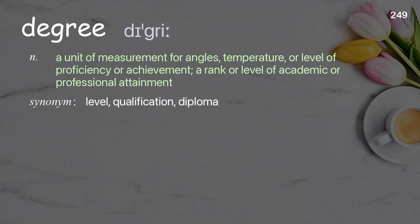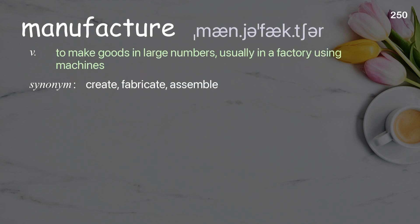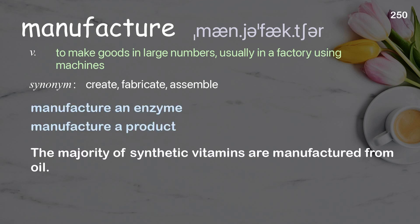Degree: a unit of measurement for angles, temperature, or level of proficiency or achievement; a rank or level of academic or professional attainment. Examples: bachelor's degree, degree centigrade. Manufacture an enzyme, manufacture a product. The majority of synthetic vitamins are manufactured from oil.